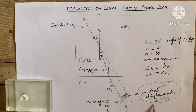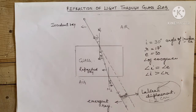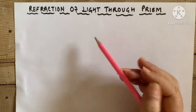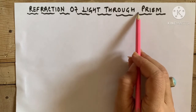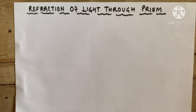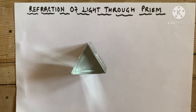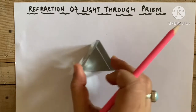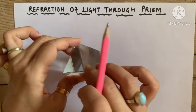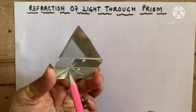Today we are going to study how light gets refracted through a prism, or we can say through a transparent prism. This is actually a glass prism. It has two triangular surfaces and three rectangular surfaces.